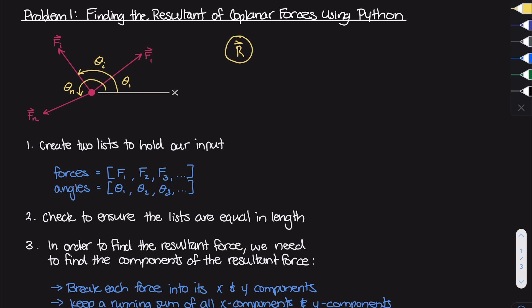This is what we're trying to find, and remember, in order to do this, we need a magnitude and a direction. So our algorithm or script needs to be able to take in any number of forces — I've only drawn three here just for illustrative purposes. But again, this could be any number of forces at any number of angles. Each force is going to have a magnitude and a corresponding angle. So for force one, it's going to have an angle theta one.